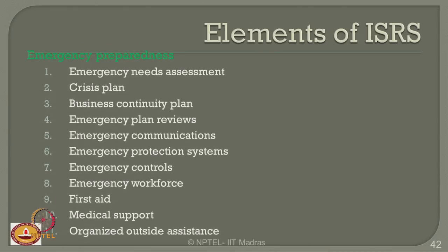The next ISRS element is emergency preparedness: level of emergency needs assessment, crisis management, business continuity plan, emergency plan reviews, emergency communications established, emergency protection systems in place, emergency controls, emergency workforce, first aid practice, medical support and assistance, and organizing outside assistance — which is very important because it manages the media image of the industry in the public domain.